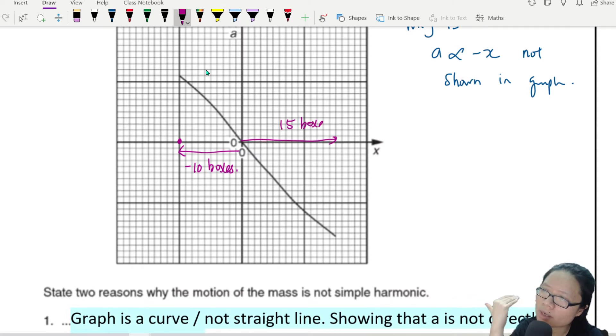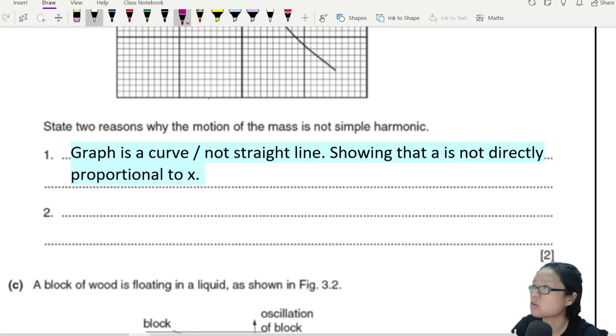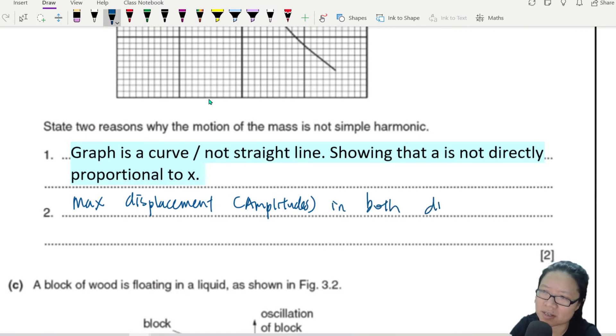So you have this very weird oscillating system that move downwards 10 boxes, but move upwards positive x 15 boxes. Down 10, up 15. This is an oscillation. Cannot lah. Because oscillating system must have the same displacement, same amplitude, left and right, up and down. So it's not the same amplitudes in both positive and negative direction. The maximum displacement, I guess you could use the term amplitude, amplitudes in both directions are different or not the same.